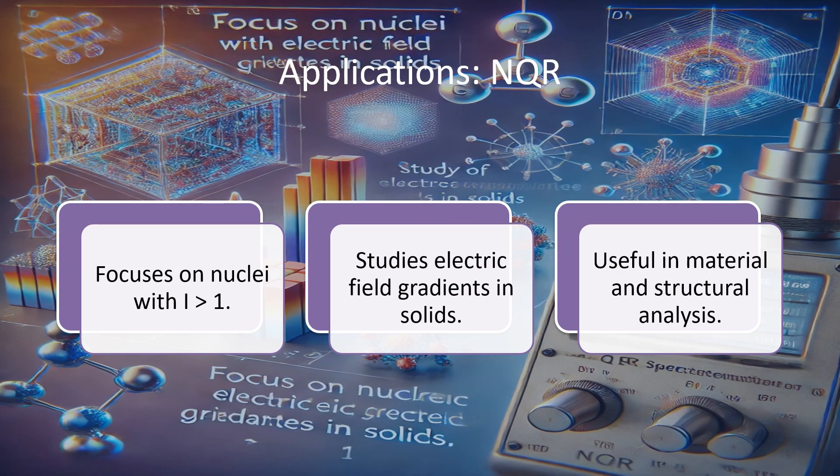Nuclear quadrupole resonance (NQR) is a less well-known application of nuclear magnets. It's used to study nuclei with spin greater than 1/2. NQR is useful in materials science and explosives detection. Unlike NMR, it doesn't require a strong external magnetic field, making it useful for specific applications.